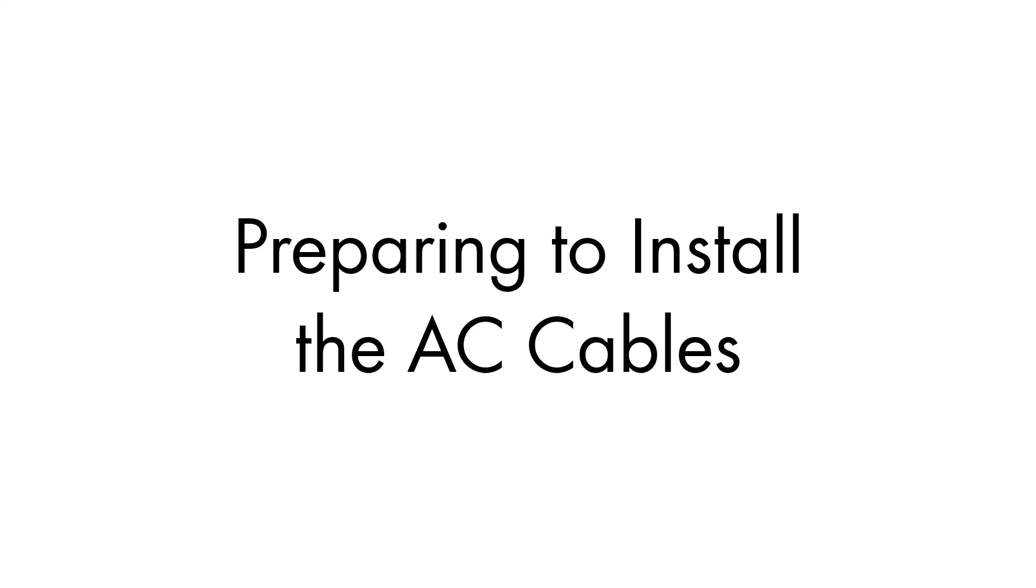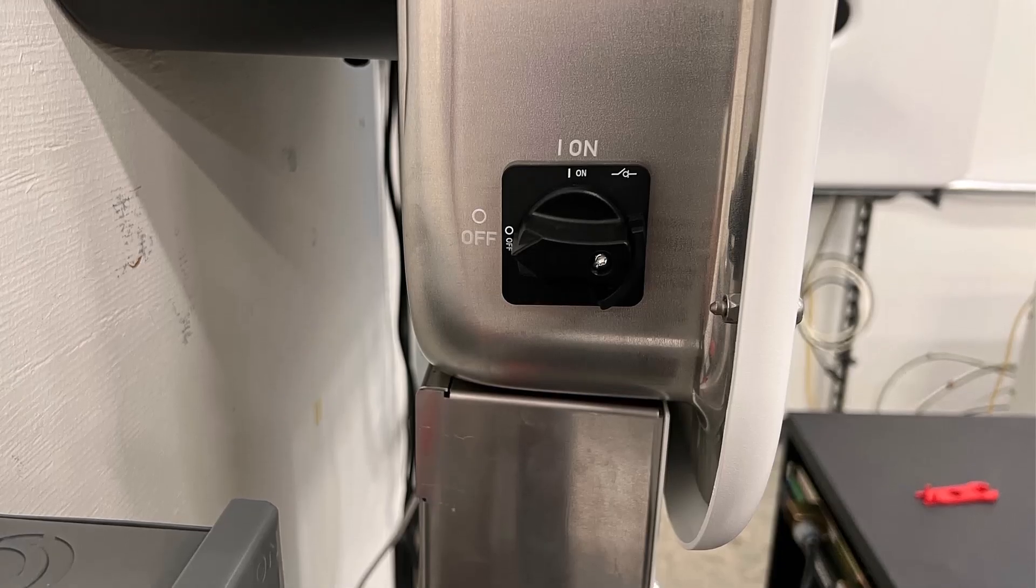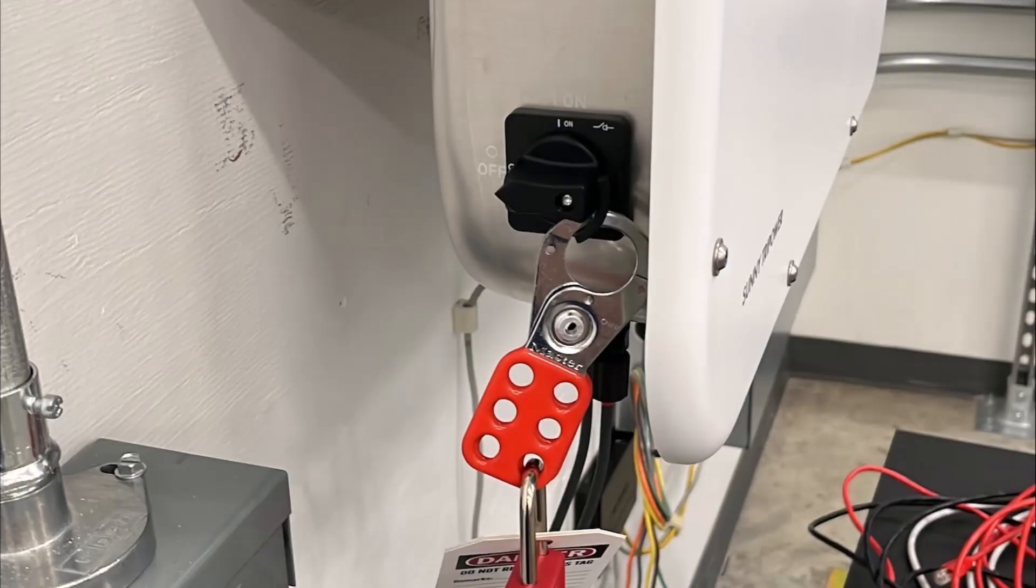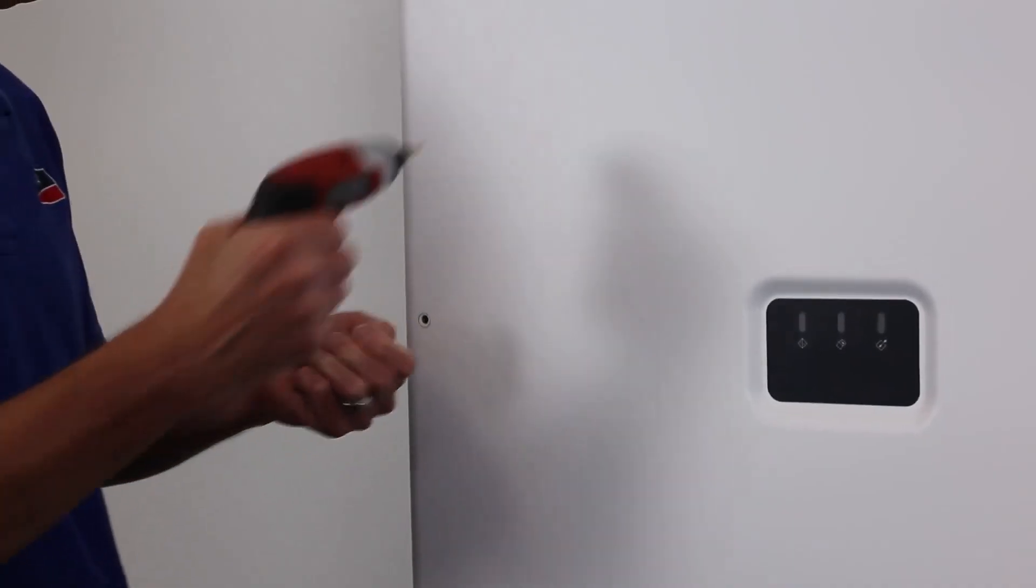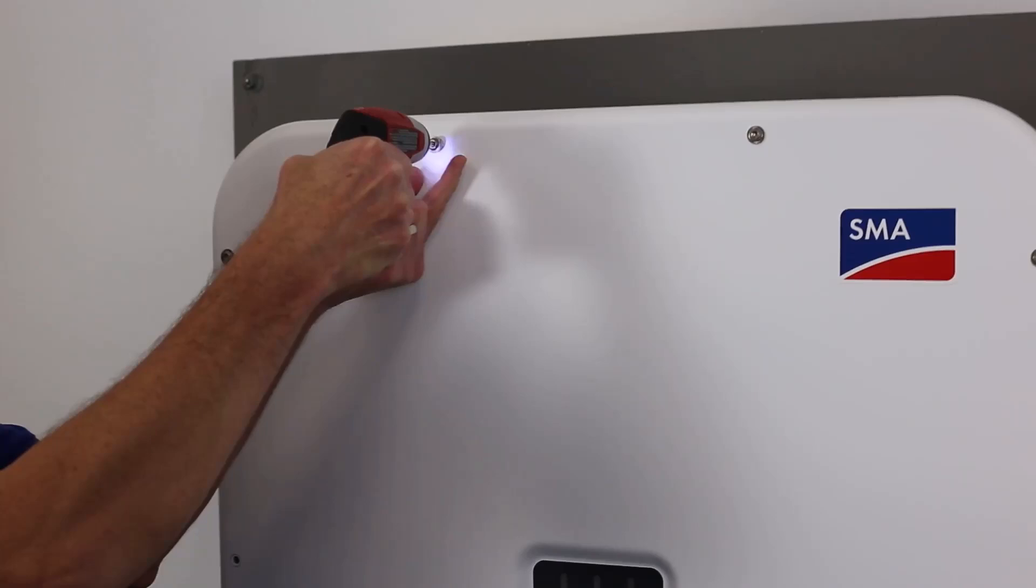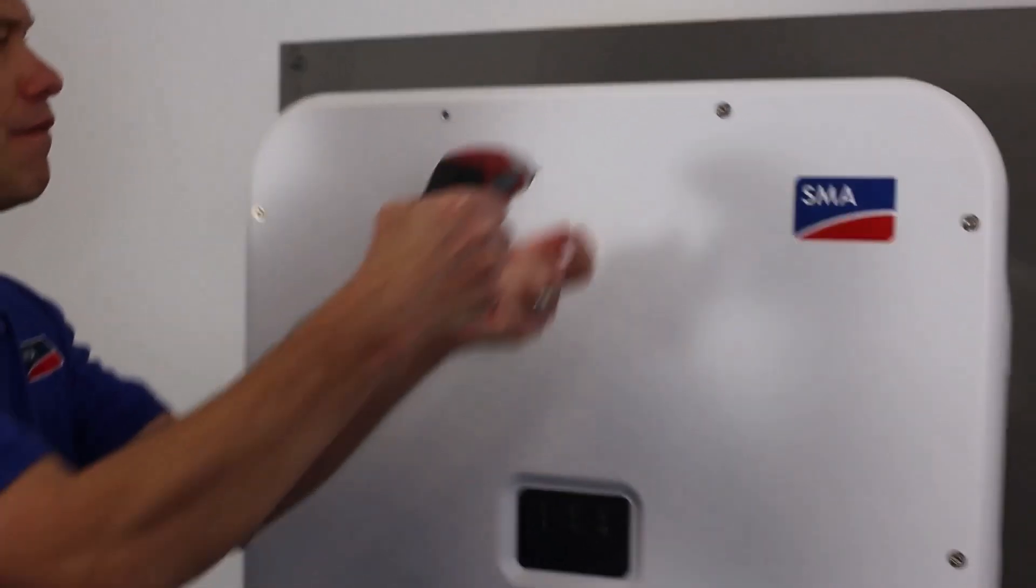Let's go through the steps to connect the AC terminal cables. Begin by ensuring the DC disconnect is in the off position. If you're using a lockout-tagout lock, please attach it now. Gently remove the inverter front cover by unscrewing the 10 Torx 25 screws. Set the lid and screws aside and look inside the inverter.